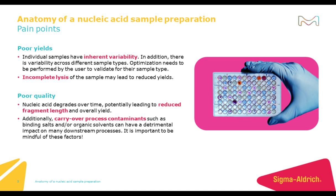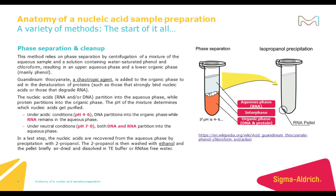Typically, optimization is required from the end user in order to validate for their sample type. Additionally, incomplete lysis can cause those reduced yields. Nucleic acids degrade over time and that could potentially lead to reduced fragment length and also impact overall yields. Additionally, you want to be careful of carryover process contaminants from sample preparation such as binding salts and organic solvents that can have detrimental impacts on downstream processes.